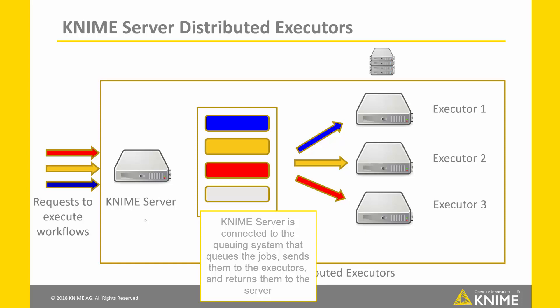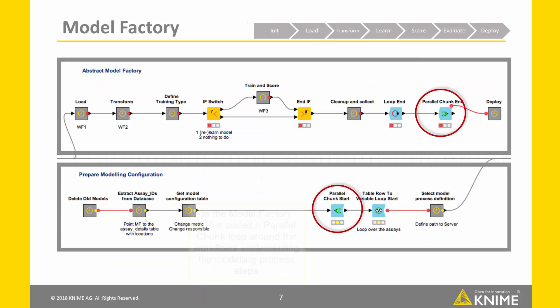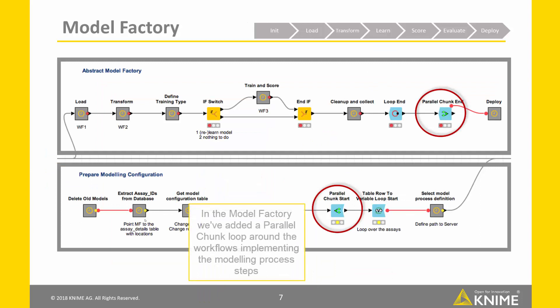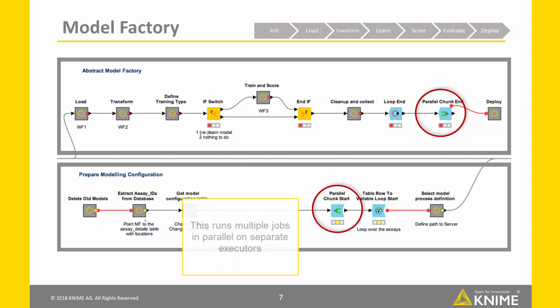In this setup, KNIME Server is connected to the queuing system that picks up the requests sent by the model factory, queues the jobs, sends them to the executors, and then returns them to the server. In the Model Factory itself, we've added a parallel chunk loop around the workflows implementing the modeling process steps. This runs multiple jobs in parallel on separate executors. Let's see how it works live.